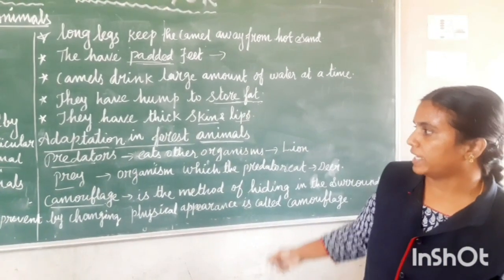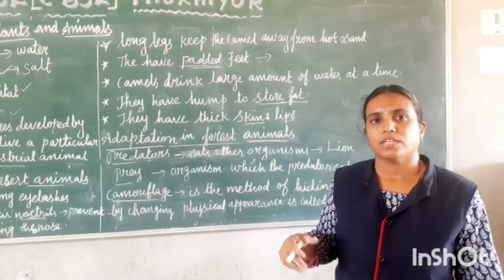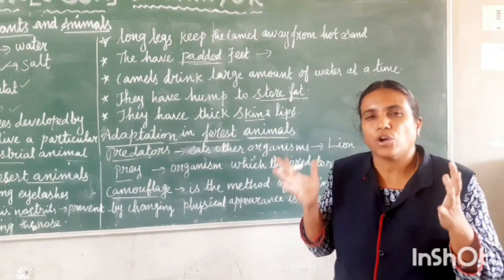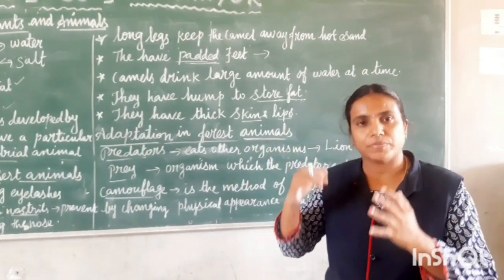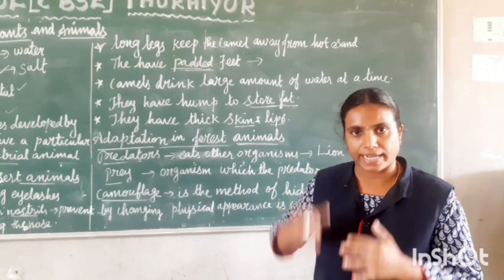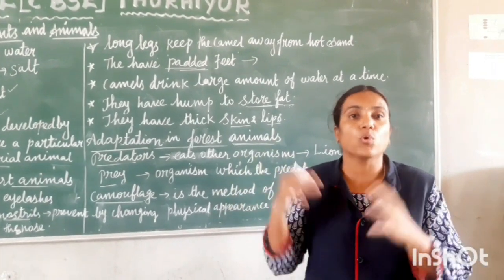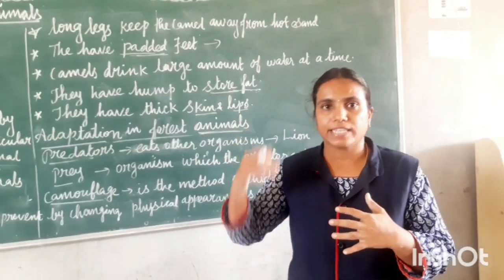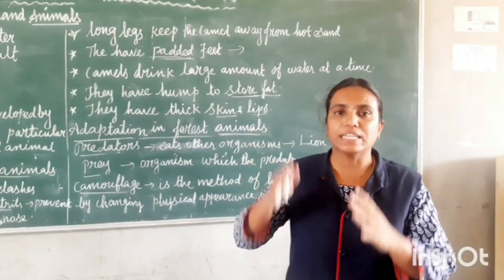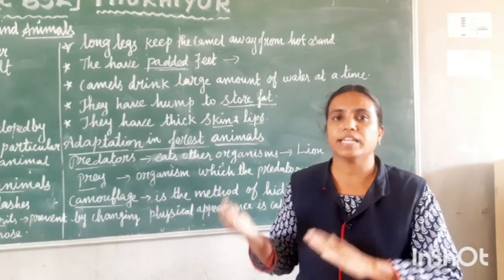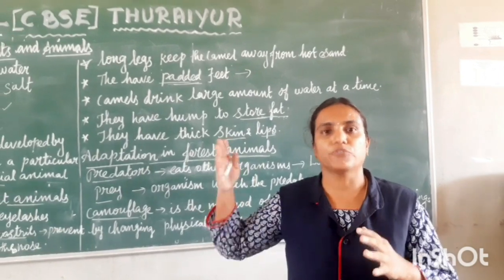Other desert animals like the kangaroo rat and desert lizard also live in burrows. They live in burrows to escape from the heat of the sun during the daytime. At night only, they come out from the burrow to search for food. Desert rats also do not need much water because they get water from their food.